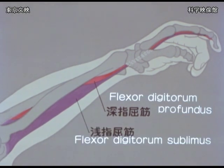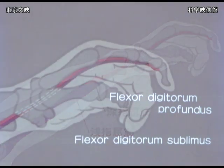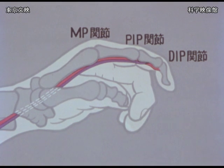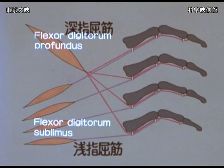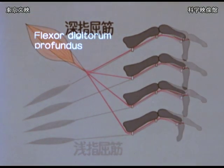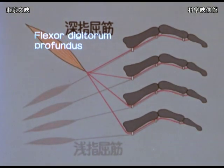The fingers are bent by the flexor digitorum sublimis and flexor digitorum profundus muscles. The sublimis ends at the middle phalanx and the profundus at the distal phalanx, so that a finger can be flexed by the profundus alone. Why, then, is there a flexor sublimis? Flexor sublimis is quite an independent muscle compared to the profundus, so that it gives independent motion to the finger.